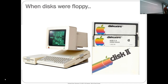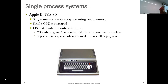You might be asking, why the heck does this have to do with anything in this class? Before you email the department chair saying you want your money back, there is a point. This was an instance of a single process system. The Apple II, the TRS-80, the Color Computer — these were single memory address spaces using real memory.